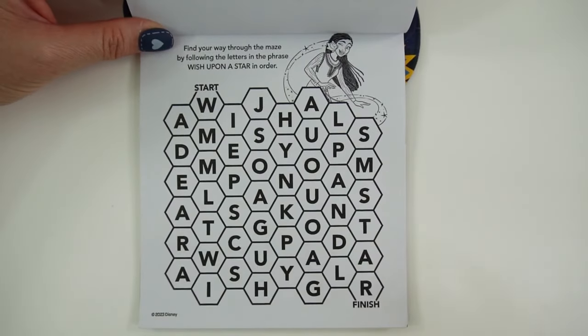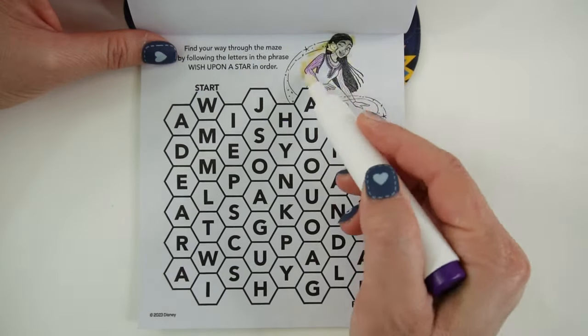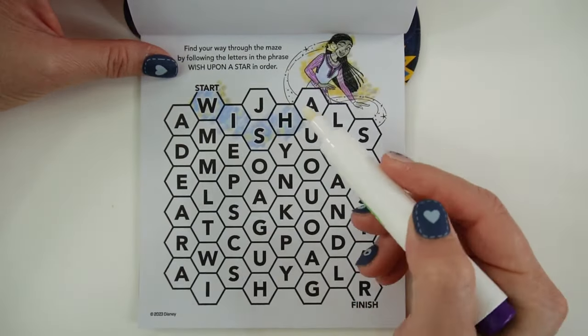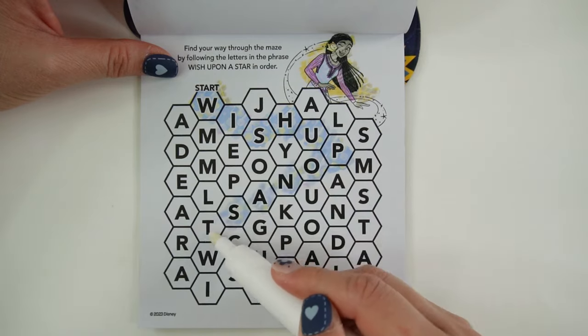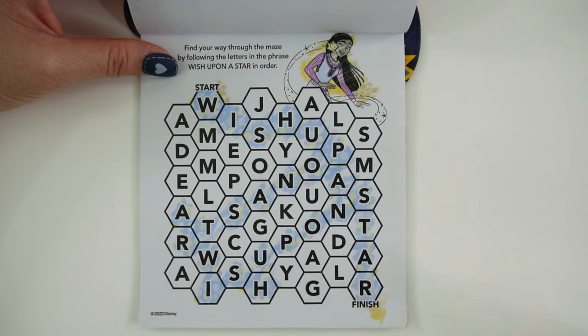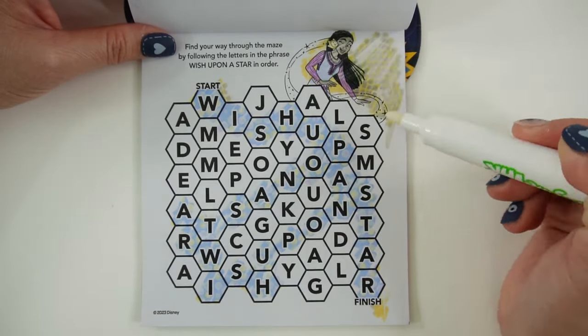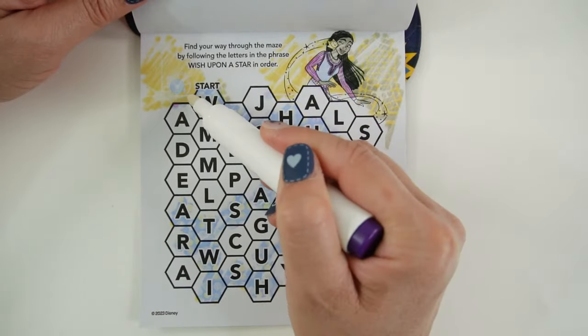Find your way through the maze by following the letters in the phrase, Wish Upon a Star, in order. And we did it. Now let's look for a wish. Here it is.